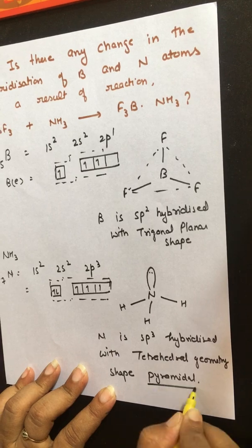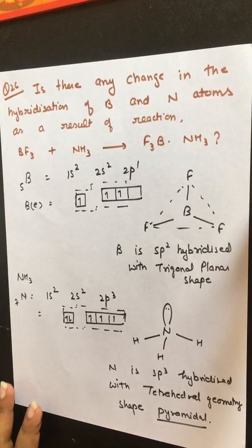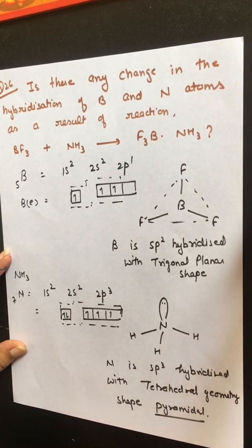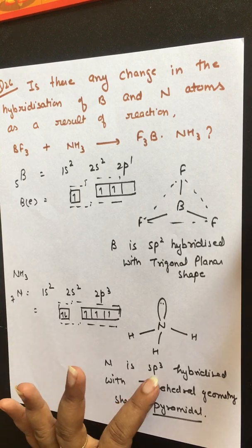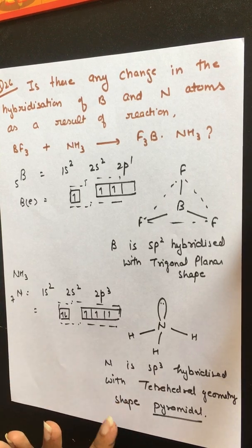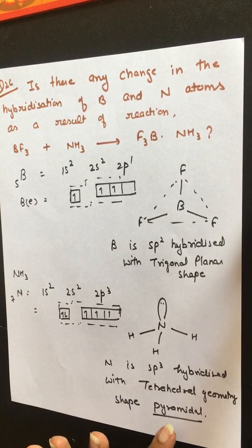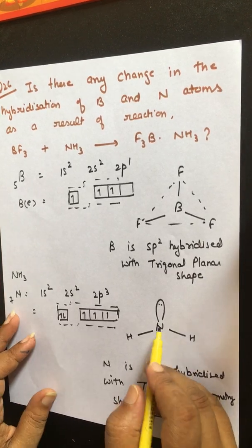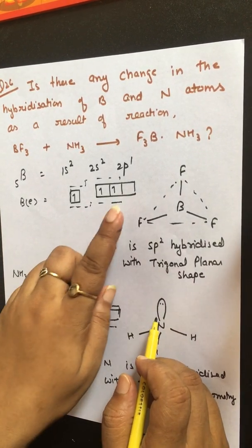Its shape is pyramidal. Nitrogen in ammonia is sp³ hybridized and ammonia has a pyramidal shape. Now, what are the changes? We know that nitrogen has a lone pair of electrons.